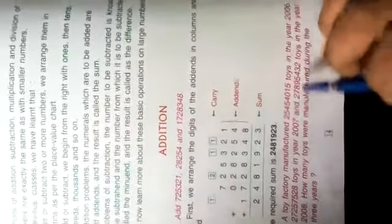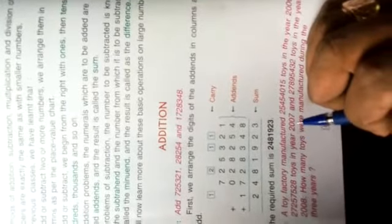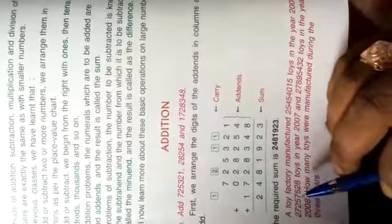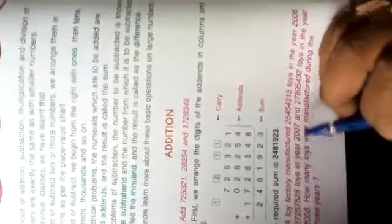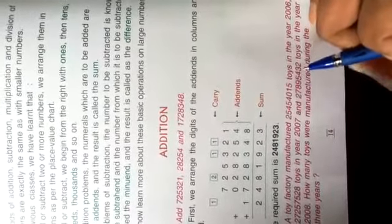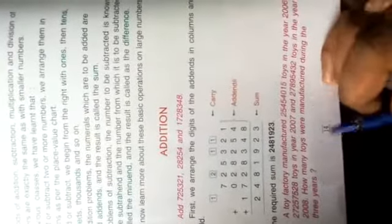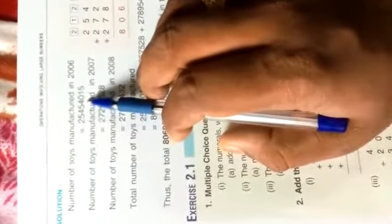Children, here's the solution. Number of toys manufactured in 2006 equals 2,54,05,415. Number of toys manufactured in 2007: 2,72,57,528.